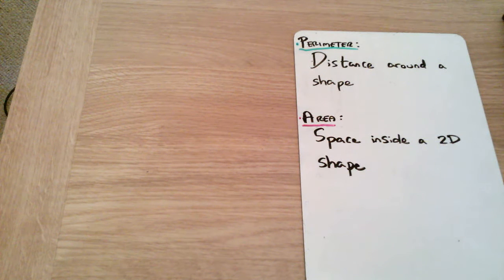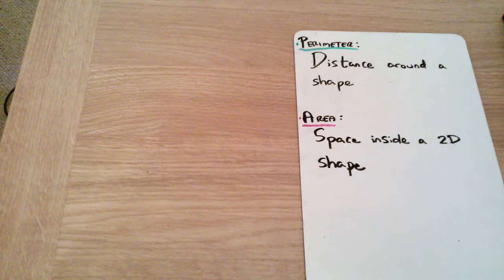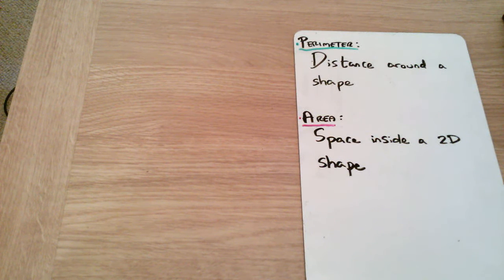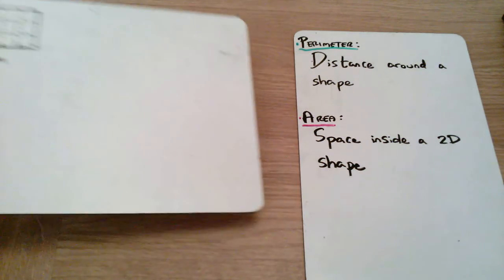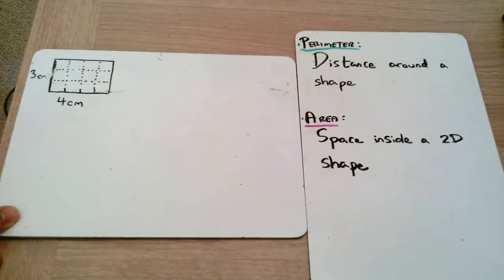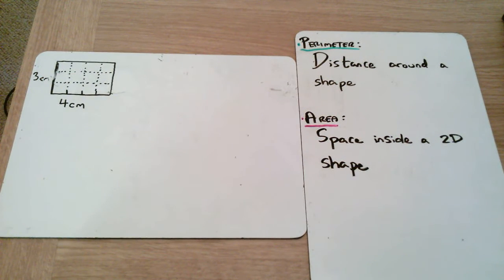Now area is a little bit different. Area is the space inside a two-dimensional shape, or a 2D shape, and I'll show you how this is a little bit different from perimeter via this rectangle here.